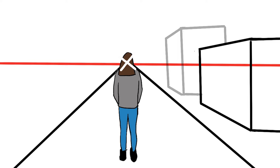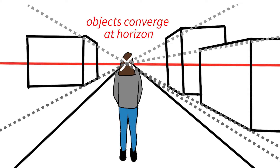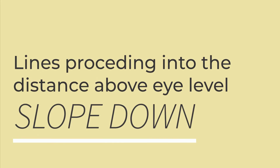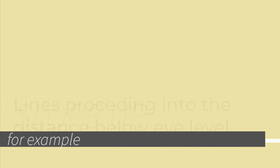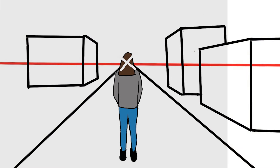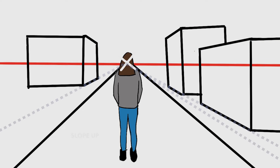As a general rule, lines proceeding into the distance above the eye level slope down, and lines below eye level slope up. I'll show you the diagram again just to highlight this point.